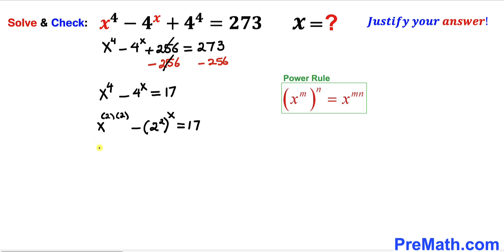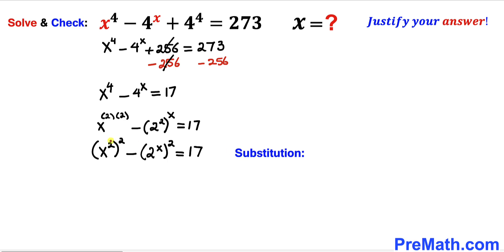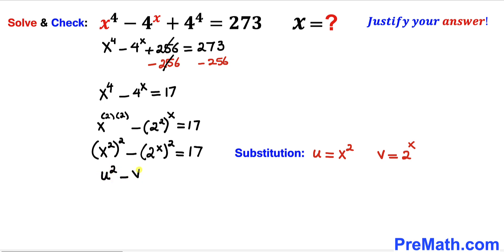So therefore we can write x power 2 whole power 2 minus 2 power x whole power 2 equals to 17. Now we are going to perform the substitution. I am going to call u equal to x power 2 and v equal to 2 power x. Then our equation becomes u power 2 minus v power 2 equals to 17.